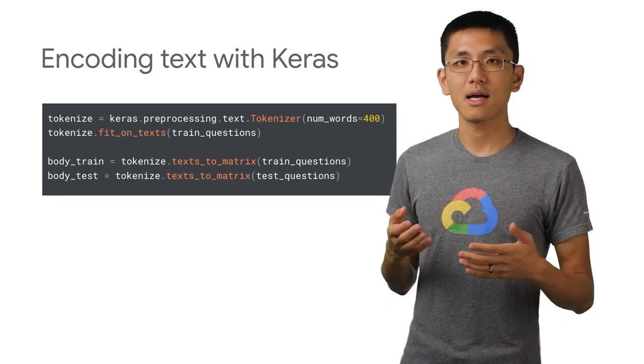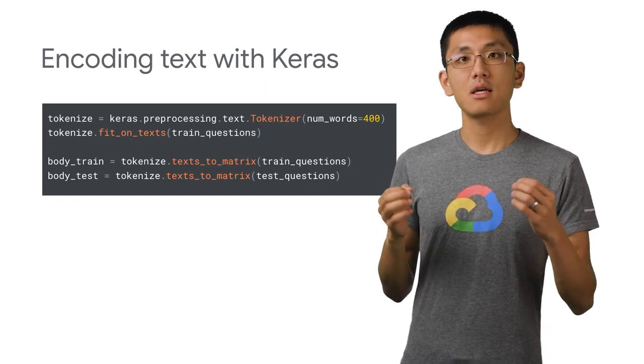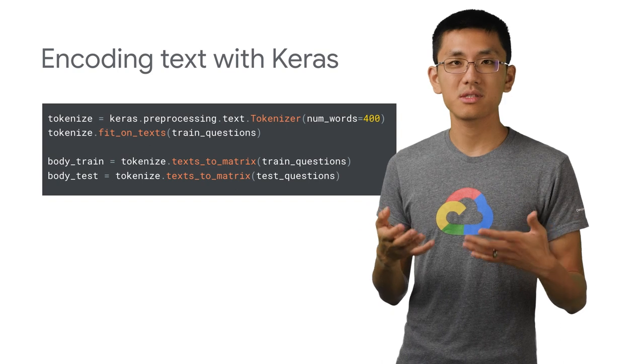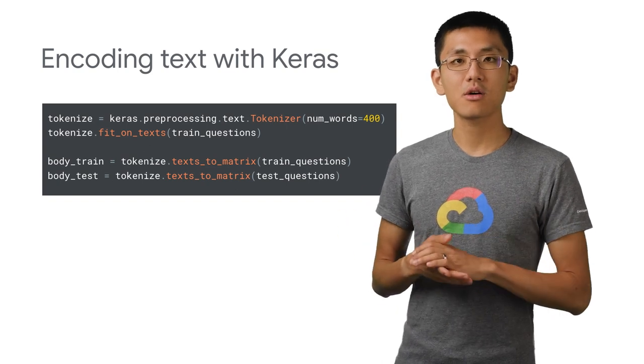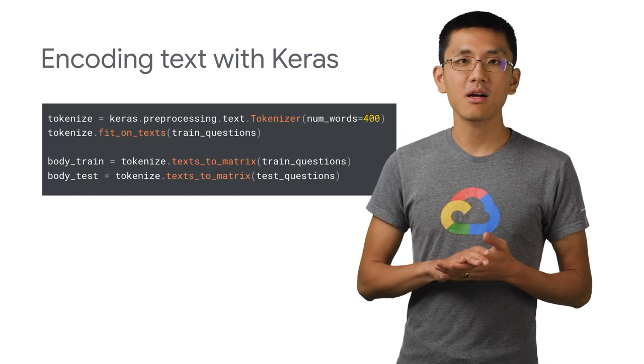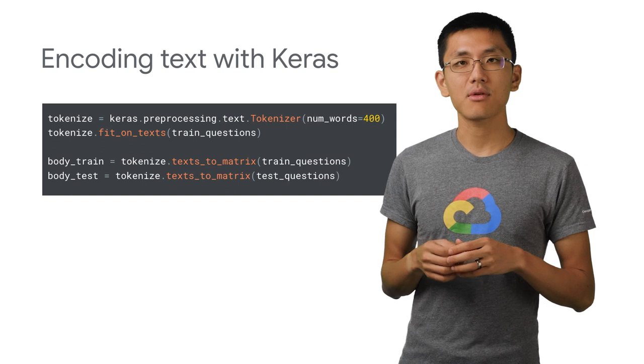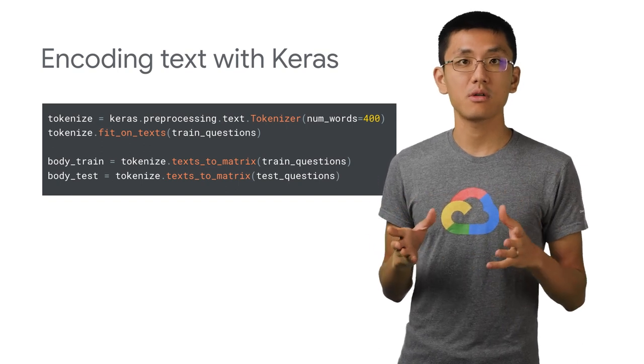Using the tokenizer class, we can select the size of the vocabulary we'd like to utilize. In our example, we just had 10 words, which is quite small. But in our code, let's choose something bigger, like 400. This will then be fit on the entire body of the text from your training data, selecting out the most common 400 words.